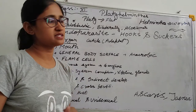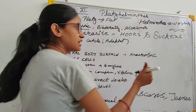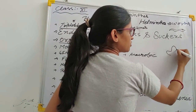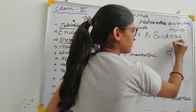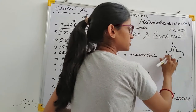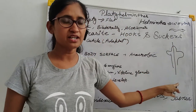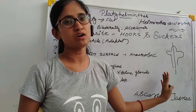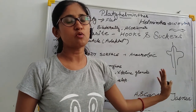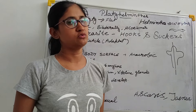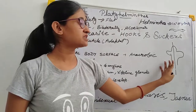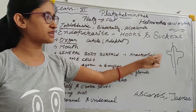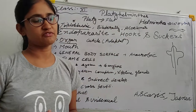Let's talk about bilateral symmetry. If you divide an animal with an imaginary line into two equal halves, the body will divide equally. You will have this symmetry — bilateral symmetry.